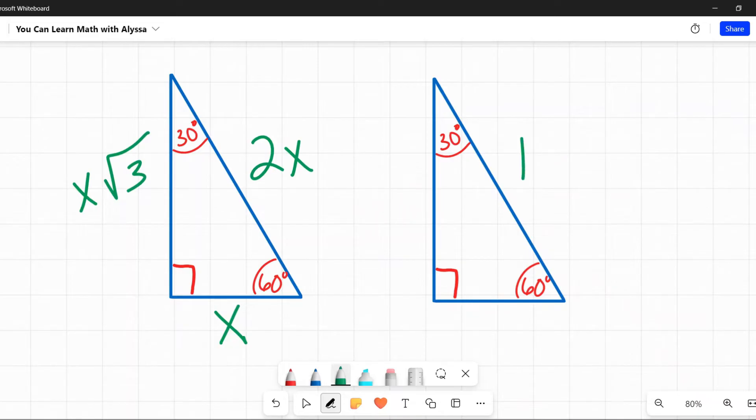If they start with the hypotenuse, you need to work backwards. If they told you this side was 14, since that is equal to 2 times X, you would need to divide by 2 to figure out what X is. 14 divided by 2 is 7. Then we would multiply by square root of 3 to get the other side, 7 square root of 3.